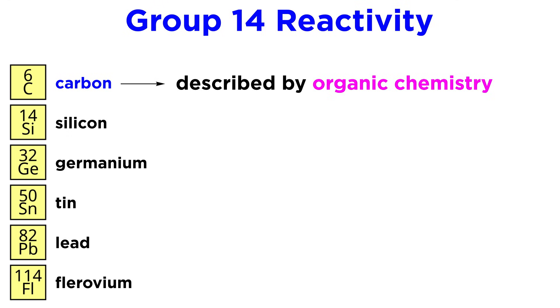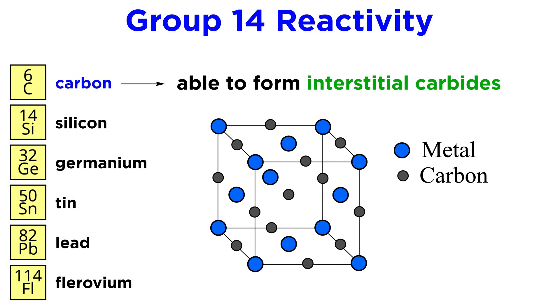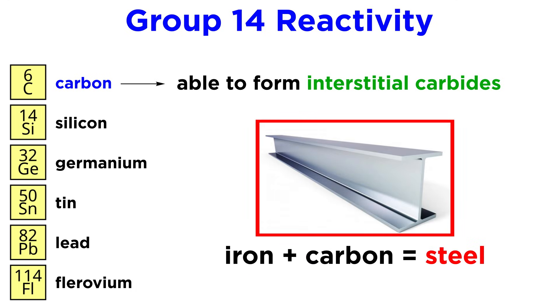Now, in terms of reactivity, we don't need to say much about carbon since that's what organic chemistry is for, but we want to be aware that beyond its covalent bonding behavior, carbon atoms can interact with transition metals to form interstitial carbides, where carbon atoms fit into octahedral holes in close-packed metal lattices. This produces alloys that are very hard and with high melting points, such as when combined with iron to make steel.